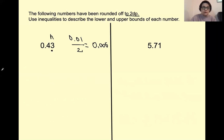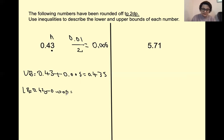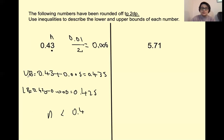For the upper bound we are going to do 0.43 plus 0.005, and the answer is going to be 0.435. For the lower bound we take away: 0.43 take away 0.005, and the answer is going to be 0.425. The inequality is going to look like this: our numbers should be smaller than 0.435 — always smaller than the upper bound — but greater than or equal to 0.425.